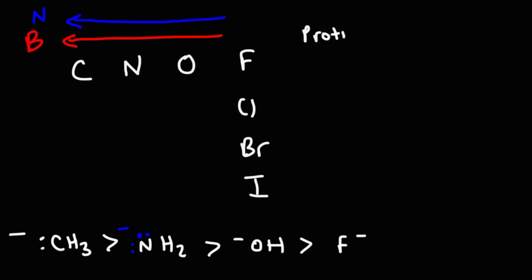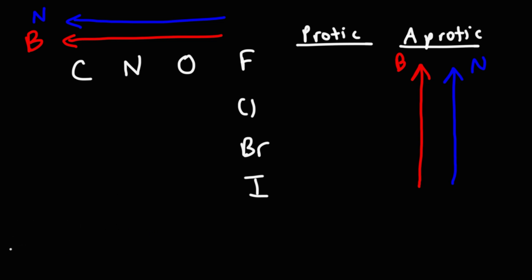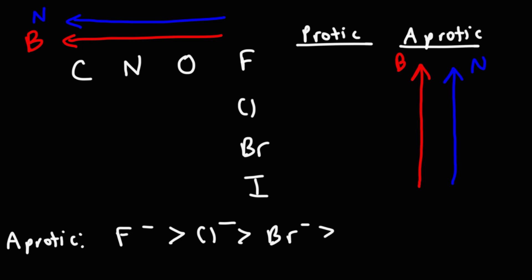Now in a protic environment, base strength doesn't mirror nucleophilic strength the same way. In a protic environment, base strength goes towards fluorine, but nucleophilic strength also increases towards fluorine. So in a protic solvent, what this means is that fluoride is a better nucleophile than chloride, which is better than bromide, and that's better than iodide.